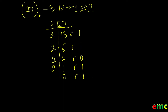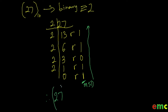Our new value in base 2 will be written from the bottom up, since our 1 at the bottom is our most significant digit. Therefore, 27 in base 10 is equal to 11011 in base 2.